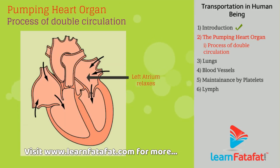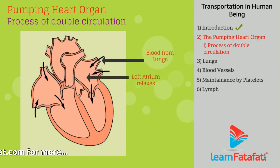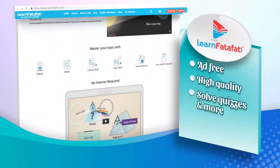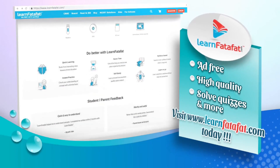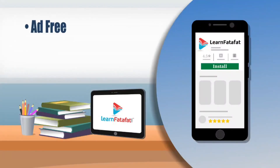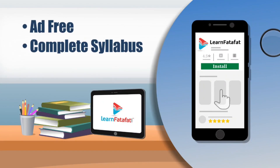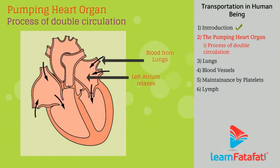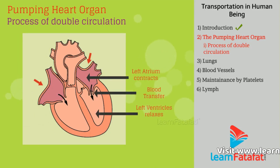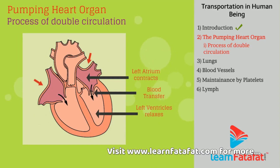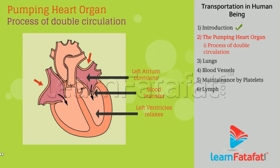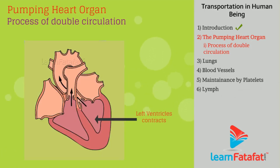In the process of double circulation: the left atrium relaxes to collect oxygen-rich blood coming from the lungs. Then the left atrium contracts and the left ventricle relaxes, transferring blood to the left ventricle. The left ventricle then contracts, forcing blood to be transferred to the whole body.